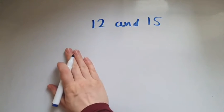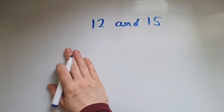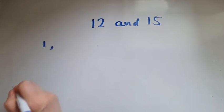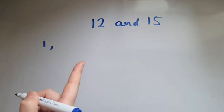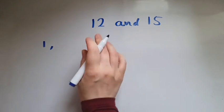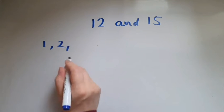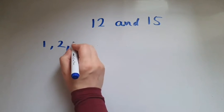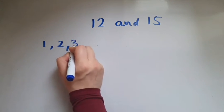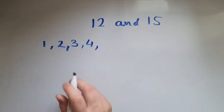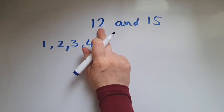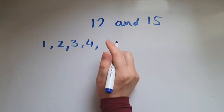Let's find first all the factors of 12. So that would be 1. 2 is also a factor of 12. What about 3? Yes, because 3 times 4 gives us 12. So 4 is also a factor. What about 5? No, because you can't divide 12 by 5 and have a whole number as the answer.